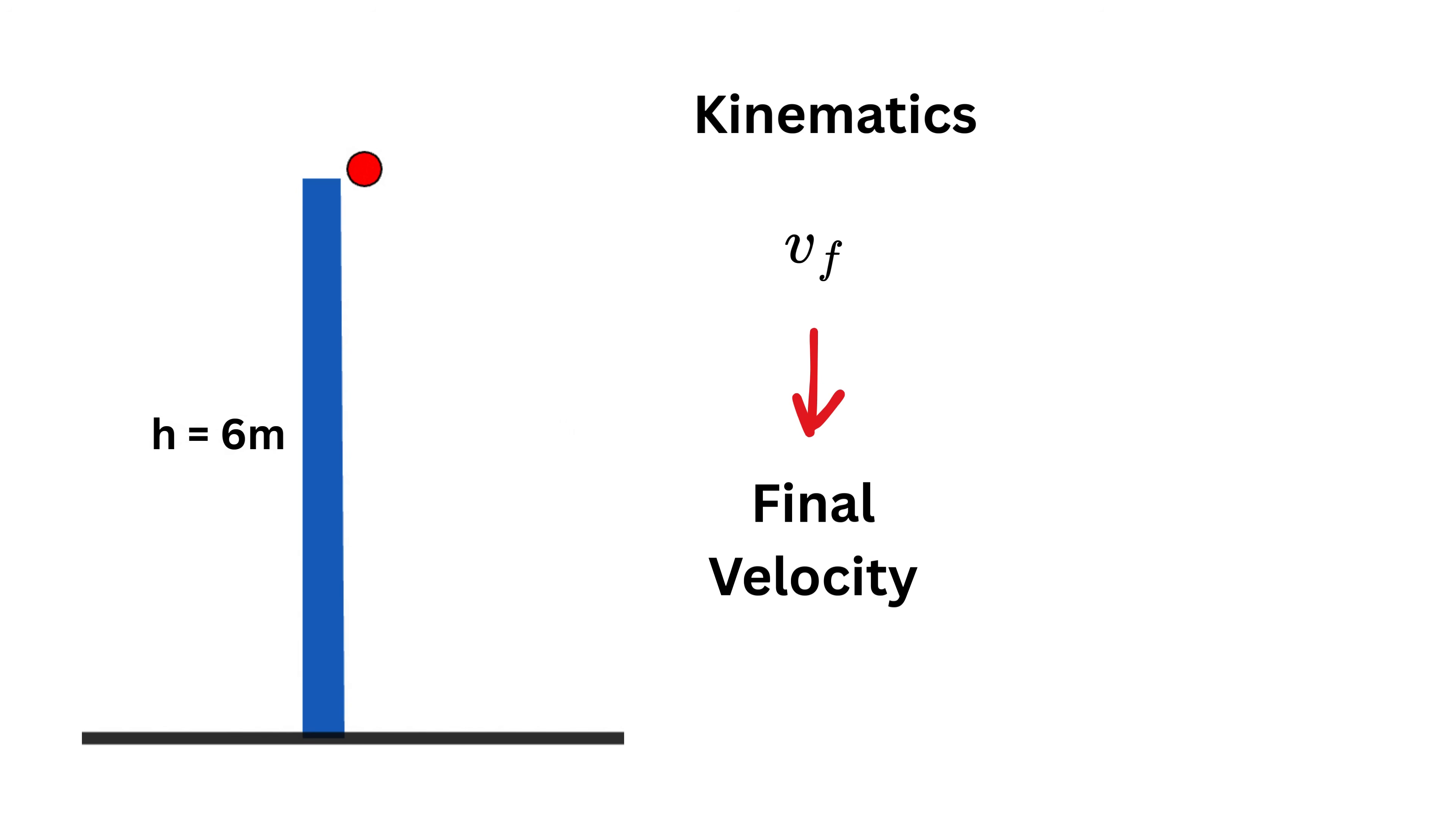The first formula relates final velocity v_f to initial velocity v_i, acceleration a, and the total elapsed time of the motion Δt, and is given like this. Note that Δt means the final time t_f minus the initial time t_i, which represents the total elapsed time of the motion.